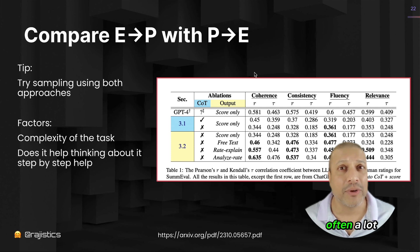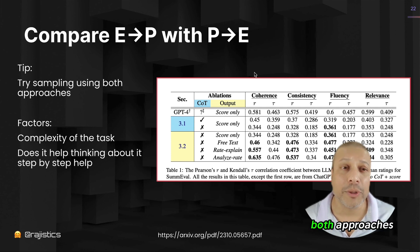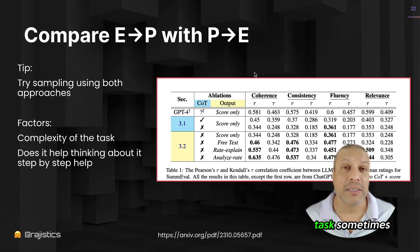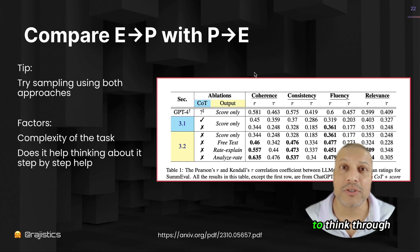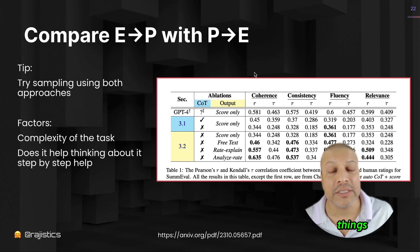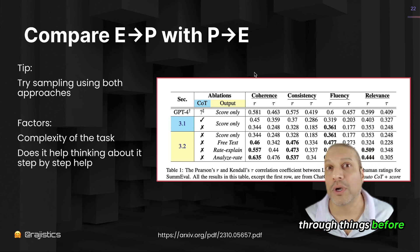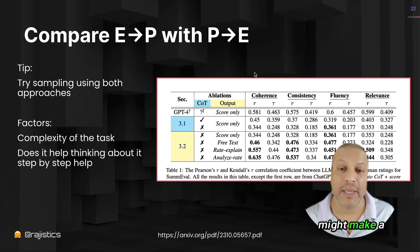This is why often a lot of people will just try both approaches. It really depends on the complexity of the task. Sometimes it's useful to ask the model to think through things, and in that case, having it think through things before it gives the prediction might make a little bit of sense.